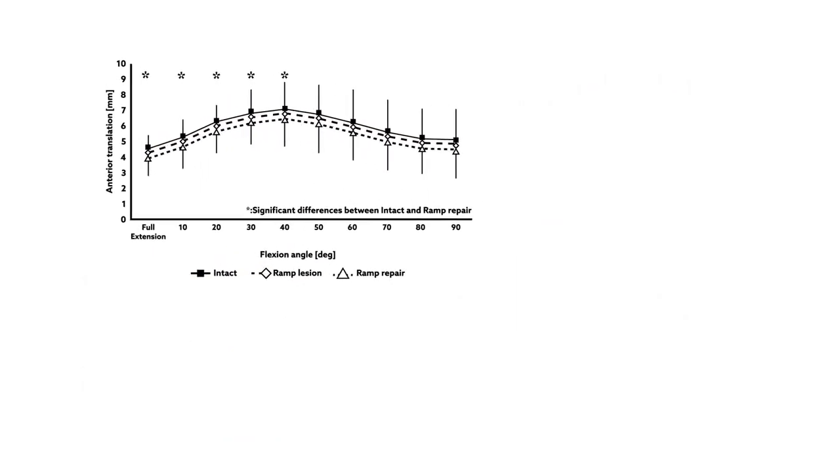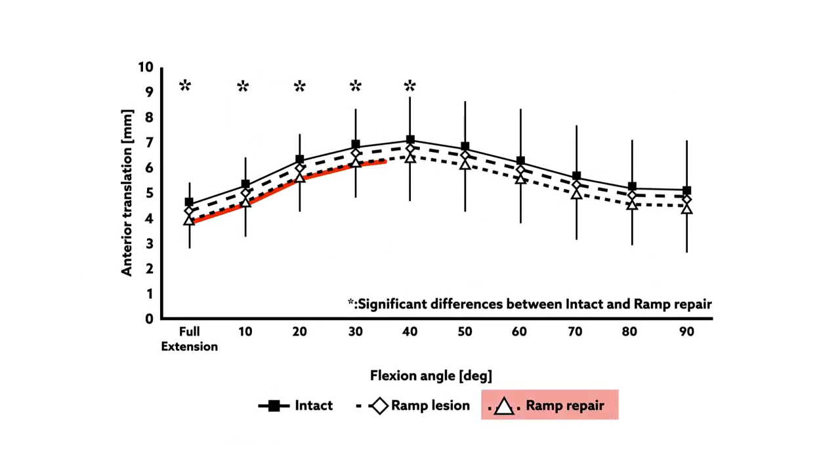However, compared with intact knees, knees with ramp lesion repair did show significantly reduced anterior translation at flexion angles ranging from full extension to 40 degrees in response to the anterior load.